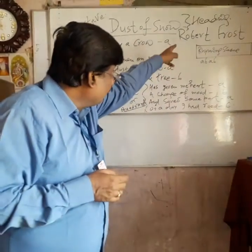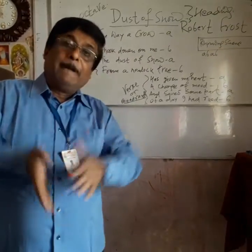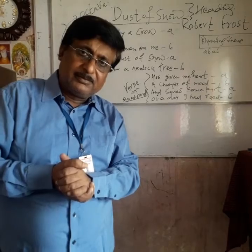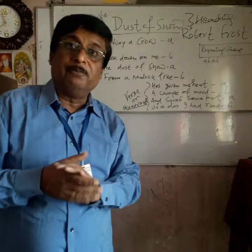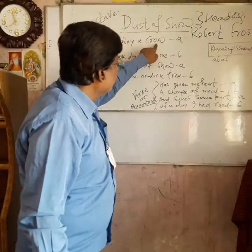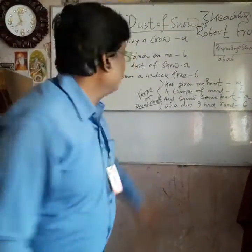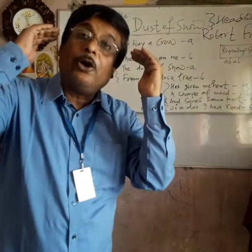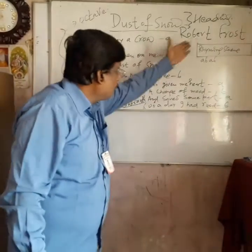Robert Frost is giving a lesson to you: even if you pass through a problematic situation, go ahead. And if you go ahead, all these problems will be auspicious for you. The crow and the hemlock tree are not auspicious words individually, but these both words made Robert Frost auspicious — it became good luck for Robert Frost.